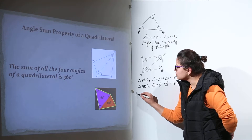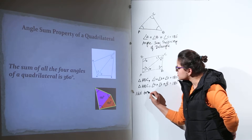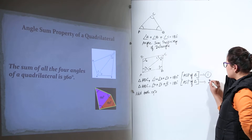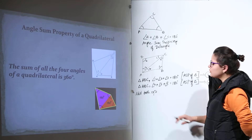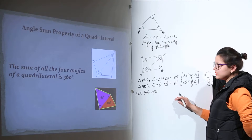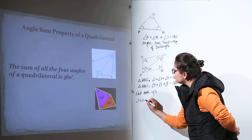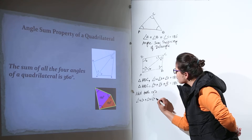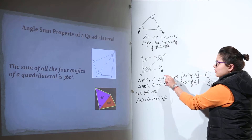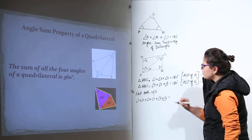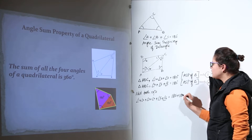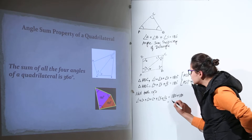Now I am asking you to add both equations. I will name them equation 1 and equation 2. If you add them both, the left-hand sides add together and the right-hand sides add together. So we get angle 1 plus 2 plus 3 plus 4 plus 5 plus 6 on the left-hand side, and on the right-hand side we have 180 degrees plus 180 degrees, which gives us 360 degrees.